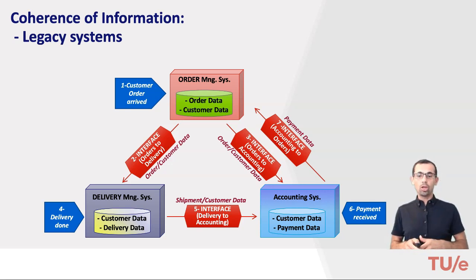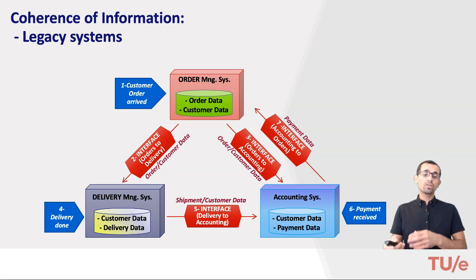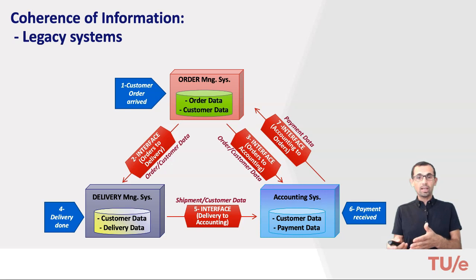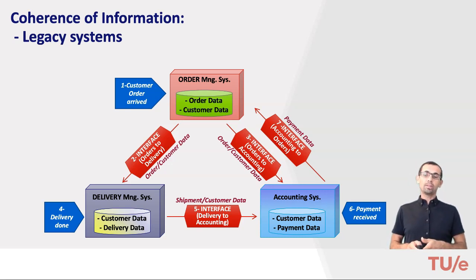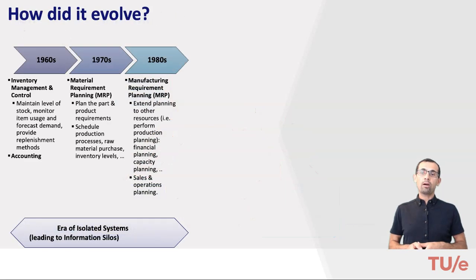At least some information related to those systems is synchronized using batch processing. For this reason, a change in the Osiris system is only seen after a day in Canvas or something — at least that used to be the case last year. We'll see about that this year. That is the case for information silos.